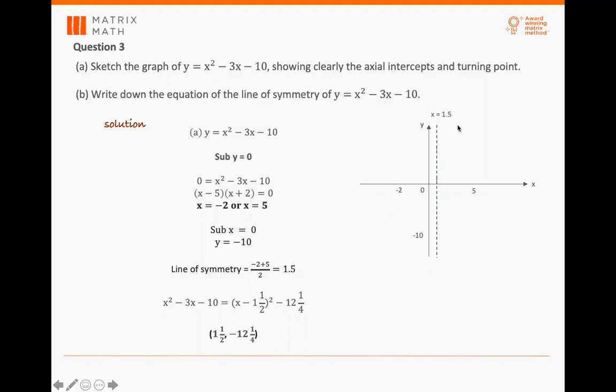Followed by y-intercept, which is negative 10, as well as a line of symmetry, which is x equals 1.5. The reason I do this is because I'll be able to plot a very smooth curve, because these are all like your pointers here that you have to hit in order to draw a smooth curve.